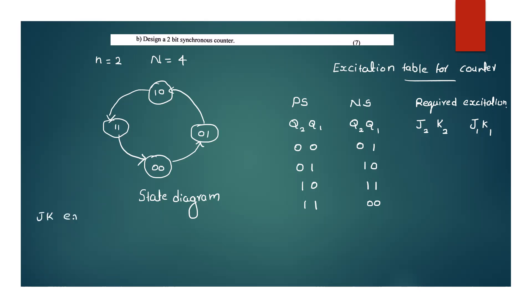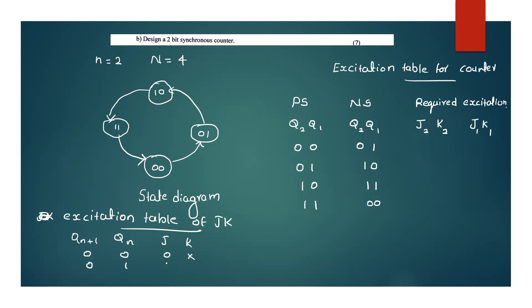Now we refer to the excitation table of the JK flip-flop. The JK excitation table is: Qn=0 to Qn+1=0 requires J=0, K=X. Qn=0 to Qn+1=1 requires J=1, K=X. Qn=1 to Qn+1=0 requires J=X, K=1. Qn=1 to Qn+1=1 requires J=X, K=0. This is the JK excitation table.